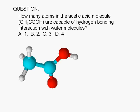How many atoms in the acetic acid molecule shown below, CH3COOH, are capable of hydrogen bonding interaction with water molecules? A: 1, B: 2, C: 3, or D: 4.